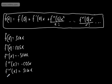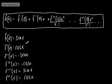The fifth derivative is going to be equal to cos x. You will see this pattern cycling in terms of the values we get of f of 0, f dashed of 0, f double dashed of 0.